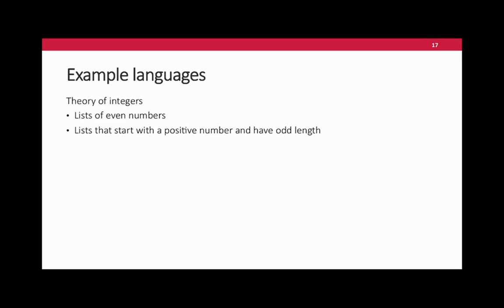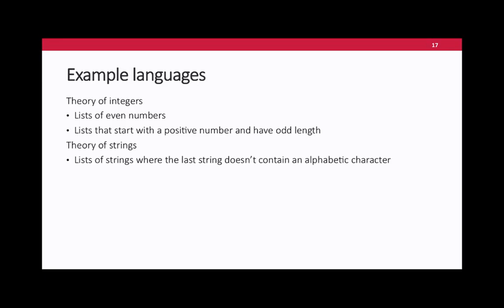What languages can I describe with this model? I can describe lists of even numbers, or lists that start with a positive number and have odd length — that uses the symbolic part to restrict the set of numbers and the automaton part to enforce a constraint on the length. I can use fancier theories like the theory of strings to describe strings of strings. One of the most useful applications is using the theory of bit vectors to describe sequences of characters in the real world — characters in C or Java — so very large sets of characters.